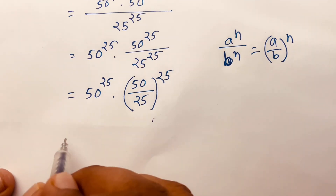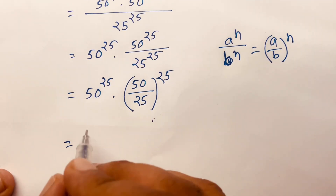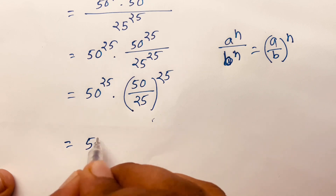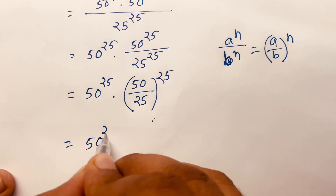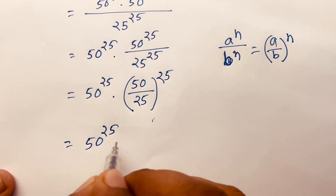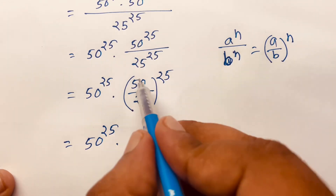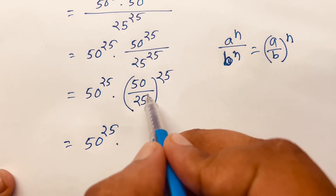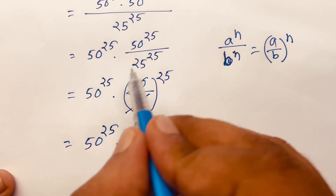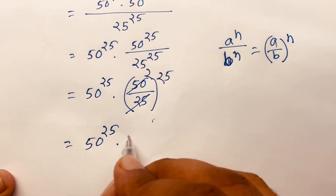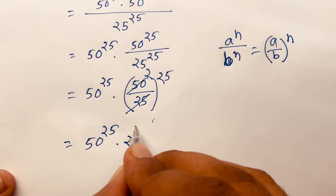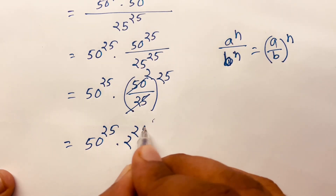Then 50 divided by 25 equals 2, so this simplifies to 50 to the power 25 times 2 to the power 25.